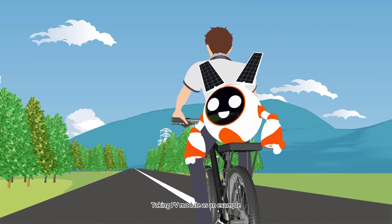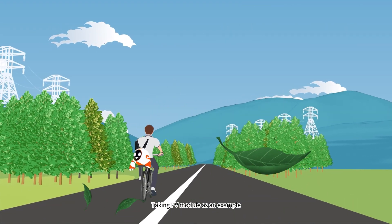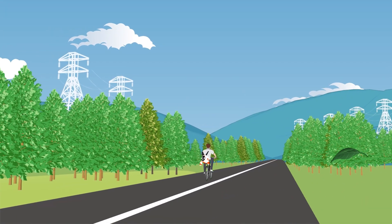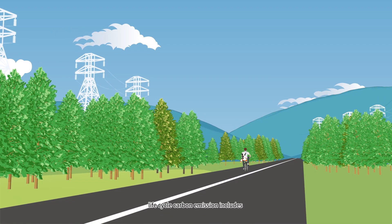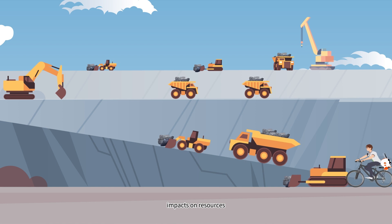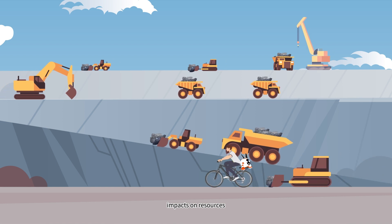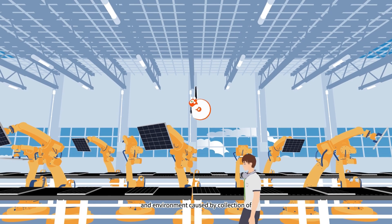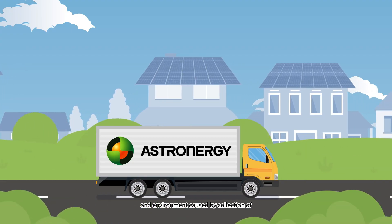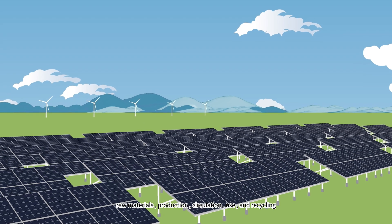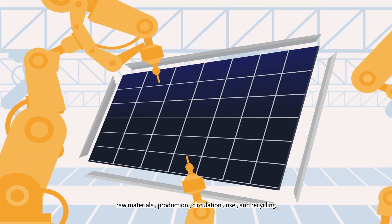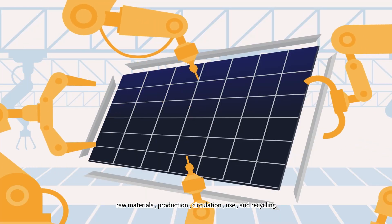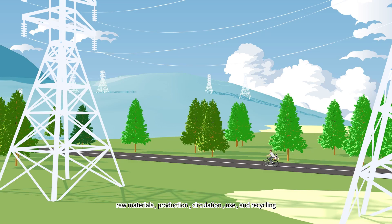Taking PV modules as an example, lifecycle carbon emissions include impacts on resources and environment caused by collection of raw materials, production, circulation, use, and recycling.